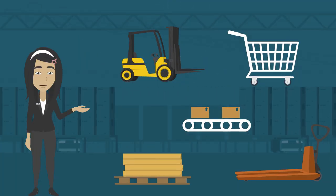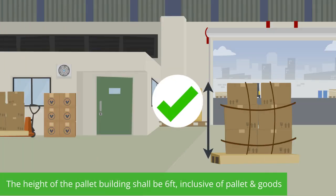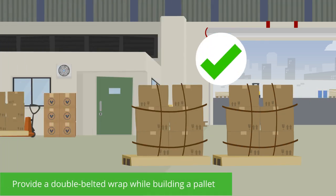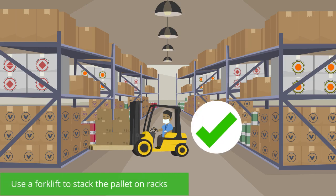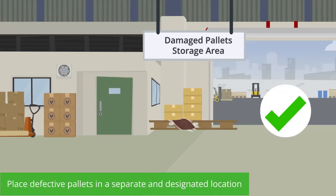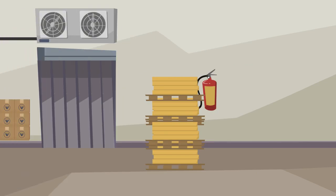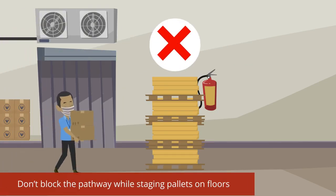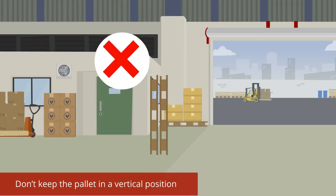Safety measures for handling pallets: the height of pallet building shall be 6 feet inclusive of pallet and goods. While building a pallet, a double-belted wrap or strap shall be provided. Use a hand pallet truck for movement of loaded pallets and a forklift to stack pallets on racks. Defective pallets shall be stored in a separate designated location. Don't block emergency exits, fire protection equipment, or pathways while stacking or staging pallets. Don't drag or drop empty pallets on the floor. Don't keep a pallet in a vertical position.